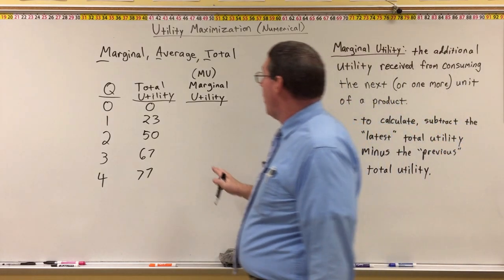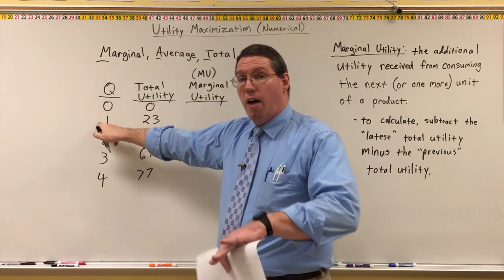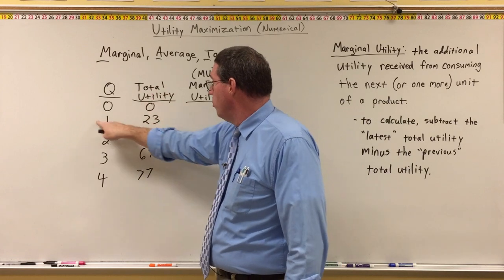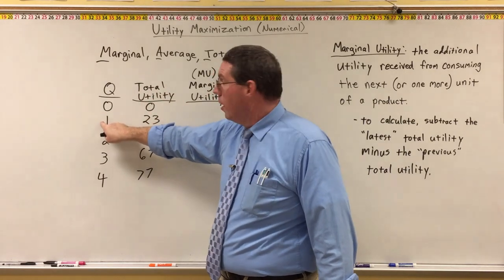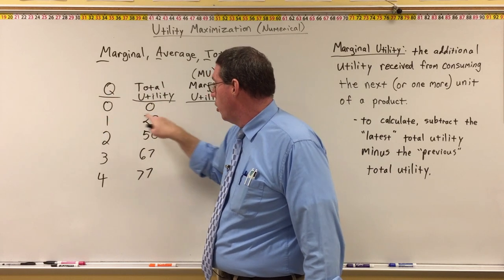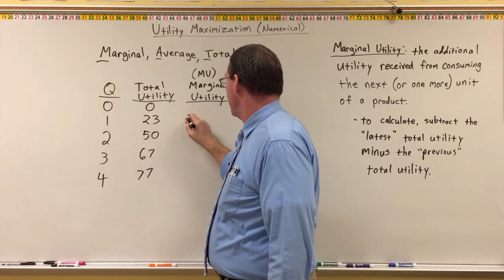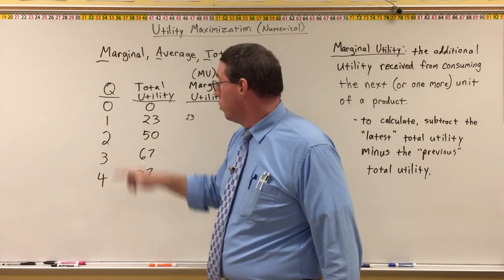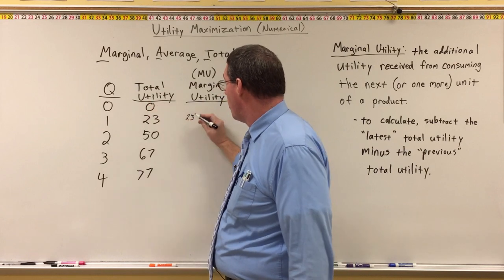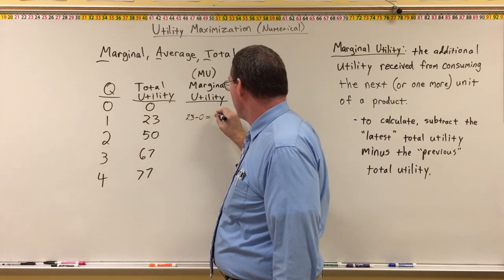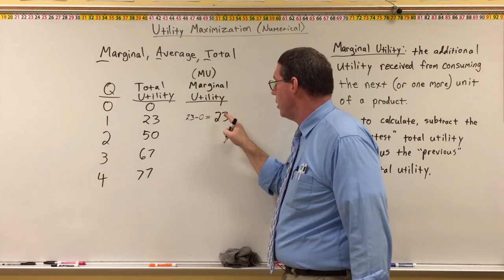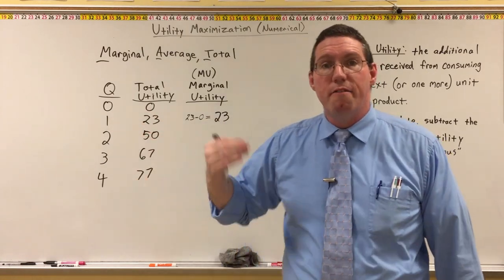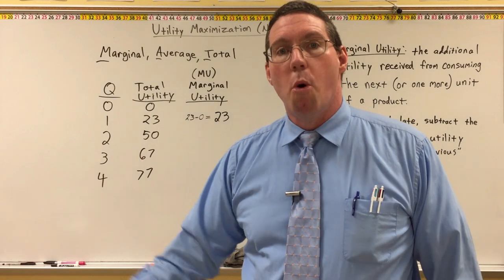The way that you calculate marginal utility if you have total utility is: subtract the new or latest total utility minus the previous total utility. So if I want to know the marginal utility of the first taquito, I take the total utility for one taquito — which is 23 — and subtract the previous total utility, which is 0. So 23 minus 0 equals 23. The marginal utility of the first taquito is 23.